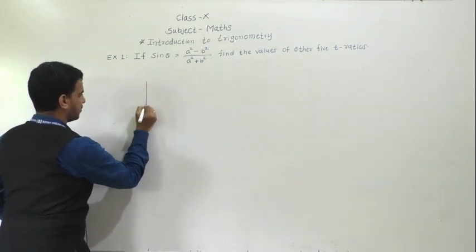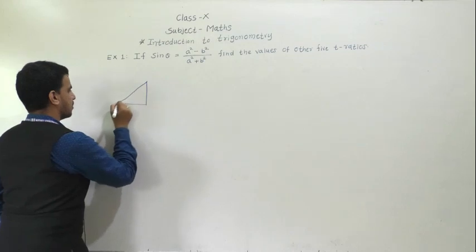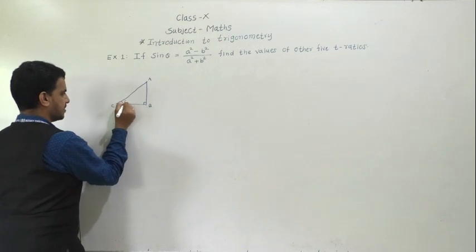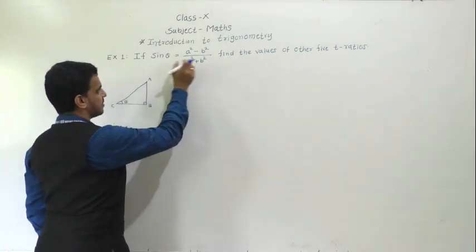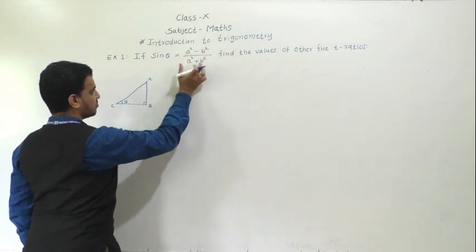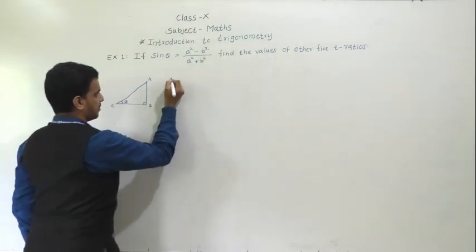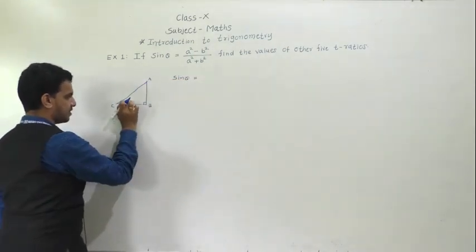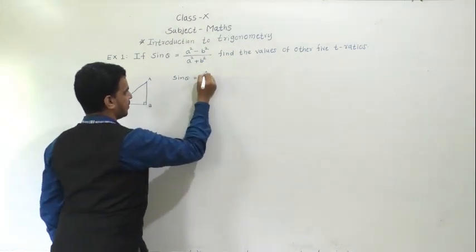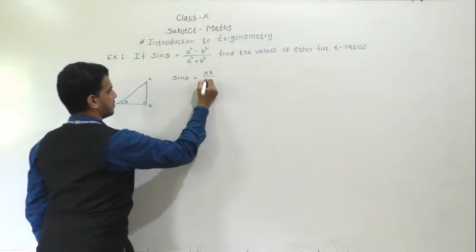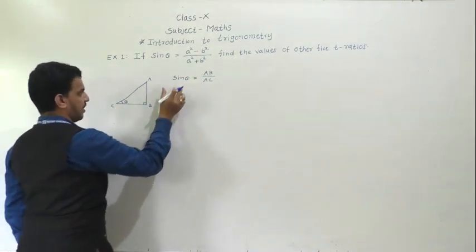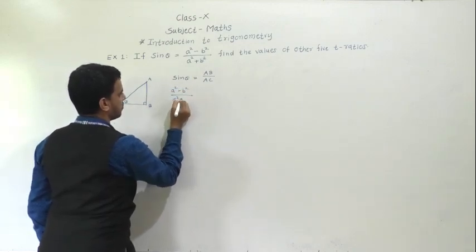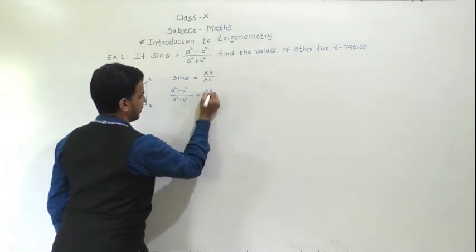First we have to draw a right triangle ABC with right angle at B. Suppose this angle is θ. So what is given here: sin θ equals (a² - b²) / (a² + b²). We know that sin θ equals the opposite side divided by hypotenuse. If the angle is θ, the opposite side is AB, divided by hypotenuse AC, so AB divided by AC.